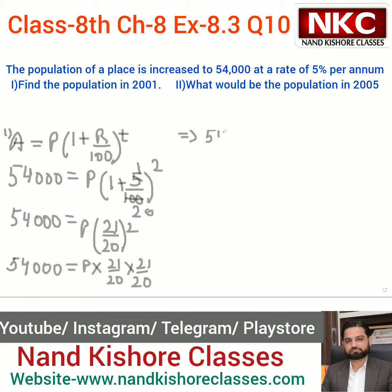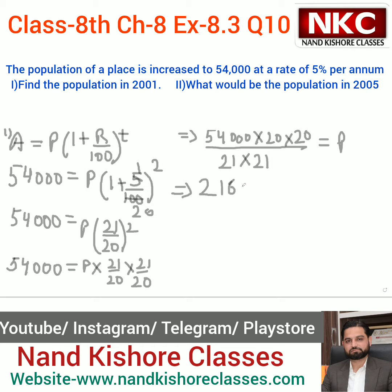Cross multiply: 54,000 × 20 × 20 on top, and both 21s come to the denominator, giving P. Please check this step very carefully — it is very important. For the upper values: 54 × 2 × 2 = 216, count the zeros, and 21 × 21 = 441.